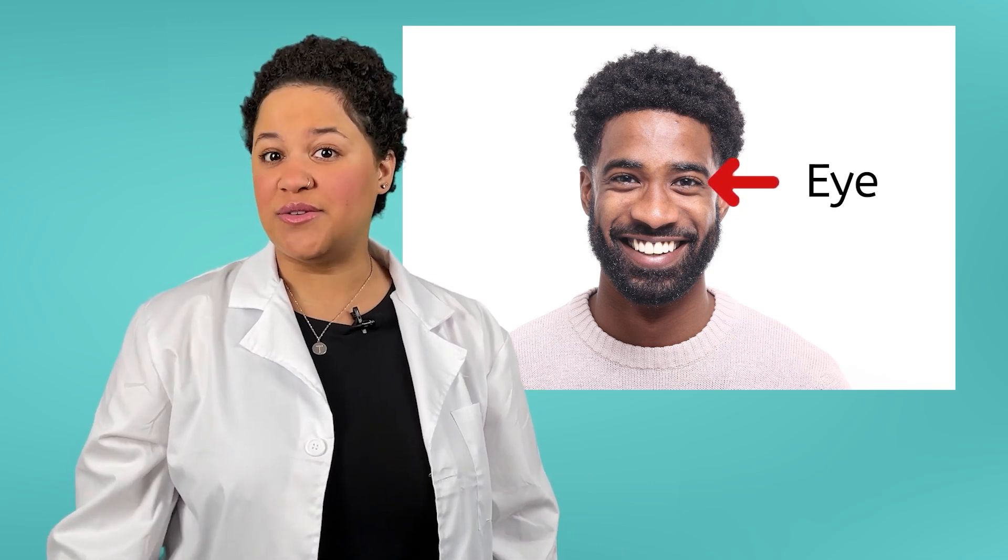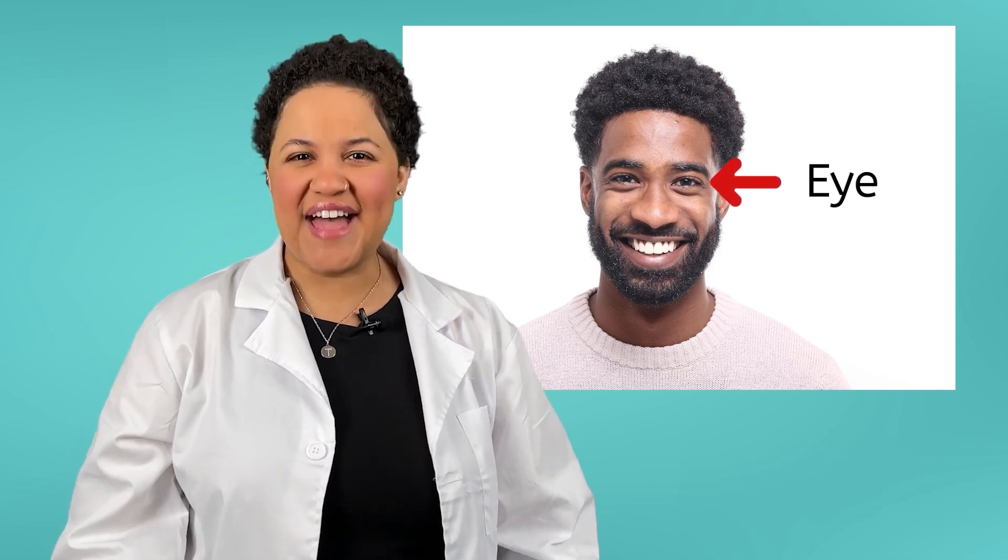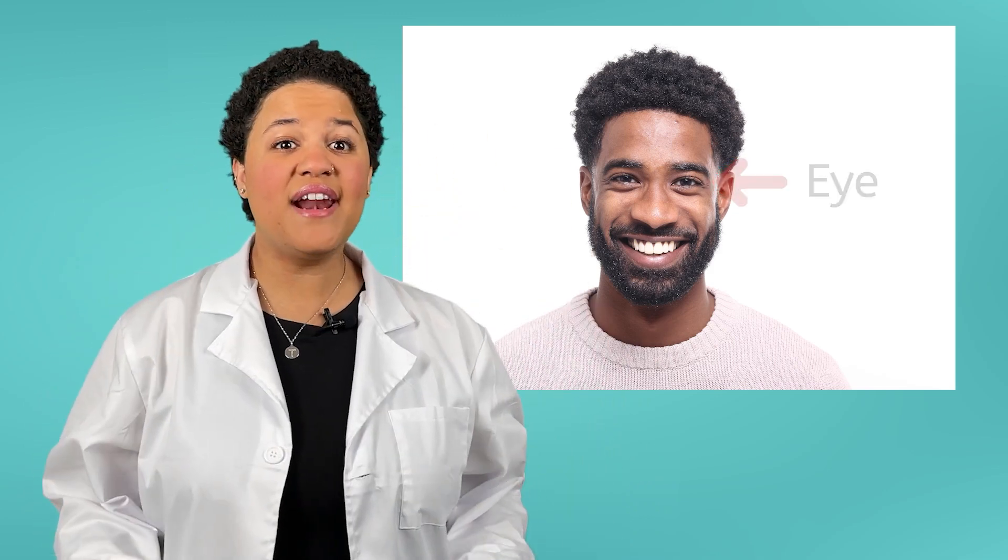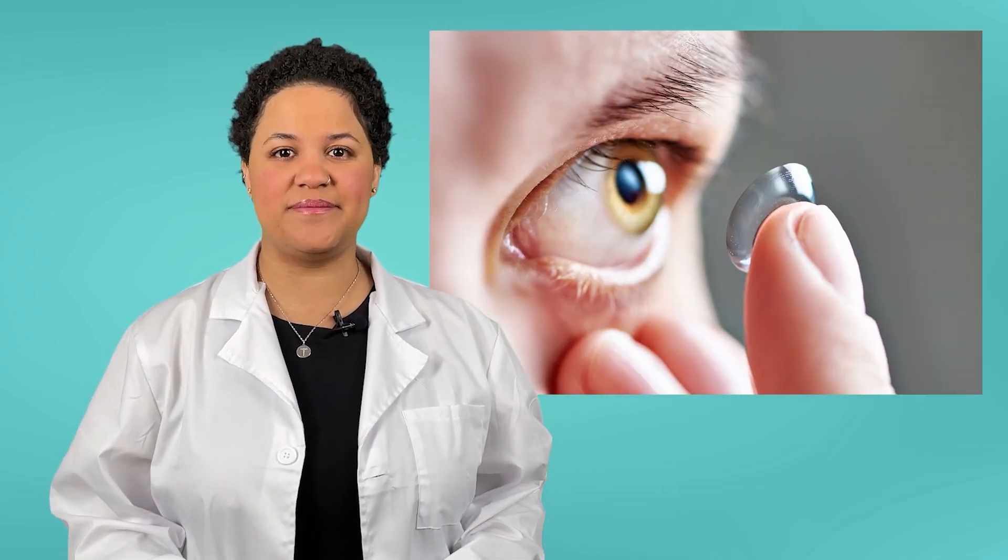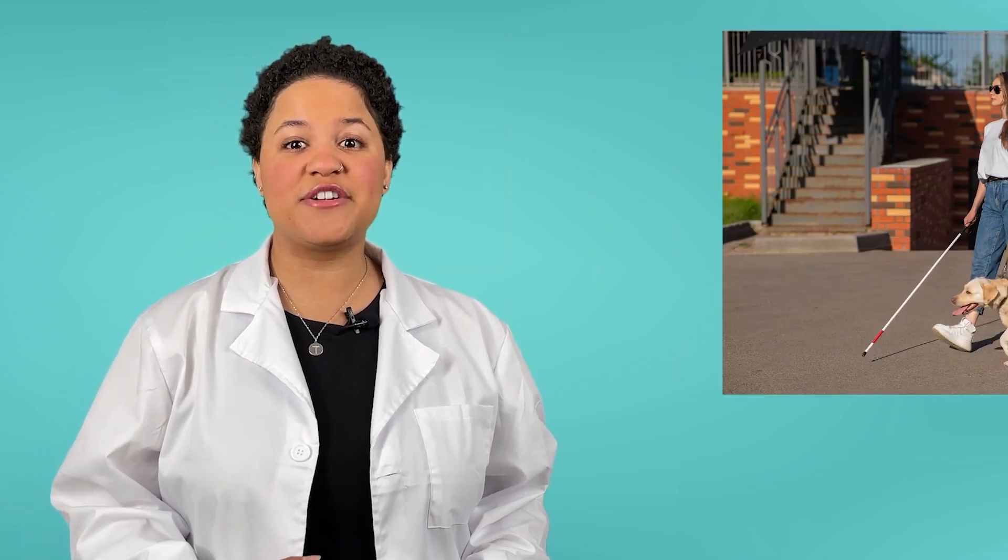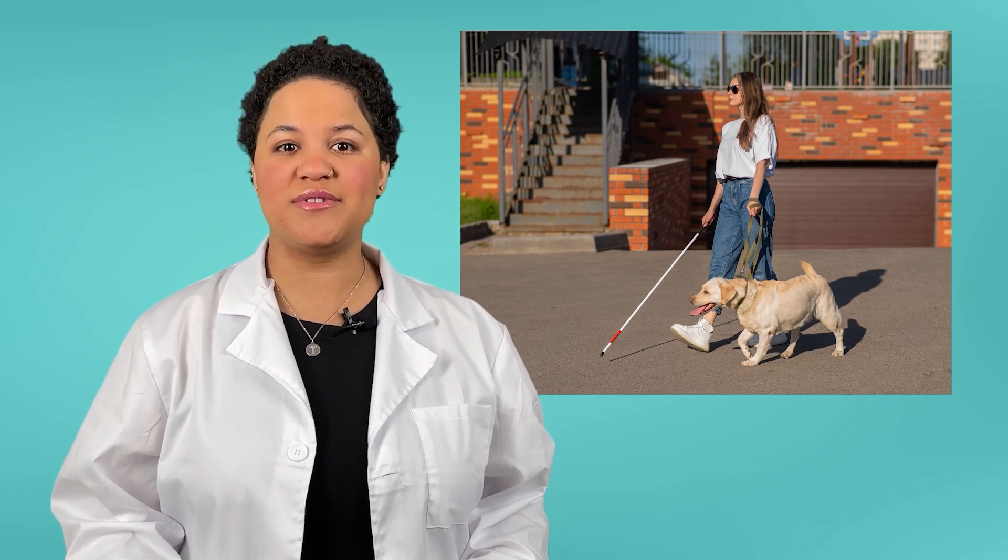We know all about the eyes from when we learned about our senses. What do they help us do? That's right, see. Not everybody is able to see everything using their eyes. Some people use glasses or contacts to help them see. Some people need different ways to help them navigate the world, like using a special cane or a guide dog to help them get around. I'm going to give this robot eyes that use glasses.